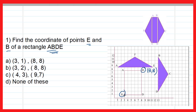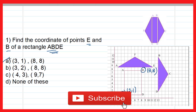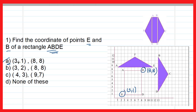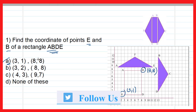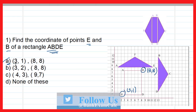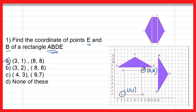Now to find the coordinates of point E: the x-coordinate is the distance from the y-axis, which is 3, and the y-coordinate is the distance from the x-axis, which is 1. Therefore the coordinates of E are (3, 1) and B are (8, 8), making option A correct. Since (3, 1) doesn't appear in any other option, there's no need to verify B's coordinates.